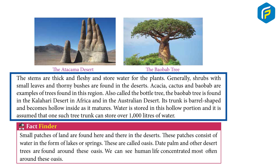The stems are thick and fleshy and store water for the plants. Generally, shrubs with small leaves and thorny bushes are found in the deserts. Acacia, cactus, and baobab are examples of trees found in this region, also called the Bottle Tree. The baobab tree is found in the Kalahari Desert in Africa and in the Australian desert. Its trunk is barrel-shaped and becomes hollow inside as it matures. Water is stored in this hollow portion, and it is assumed that one such tree trunk can store over 1,000 litres of water.